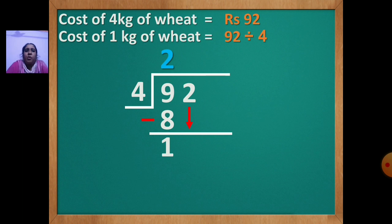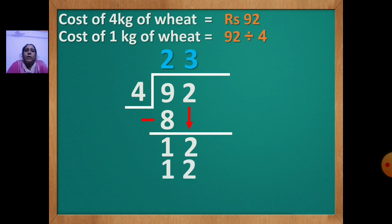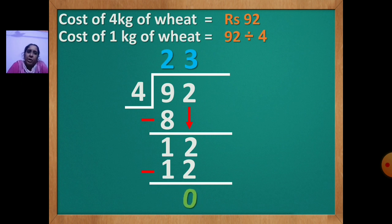Now you will bring the second number down — bring 2 down — so you get 12. Again you have to use the table of 4. When do you get 12 in the table of 4? 4 threes are 12. So you will write 3 up and 12 down. Draw the line, put the sign of minus, and do subtraction. 12 minus 12: 2 minus 2 is 0, 1 minus 1 is 0. So the answer is 23.